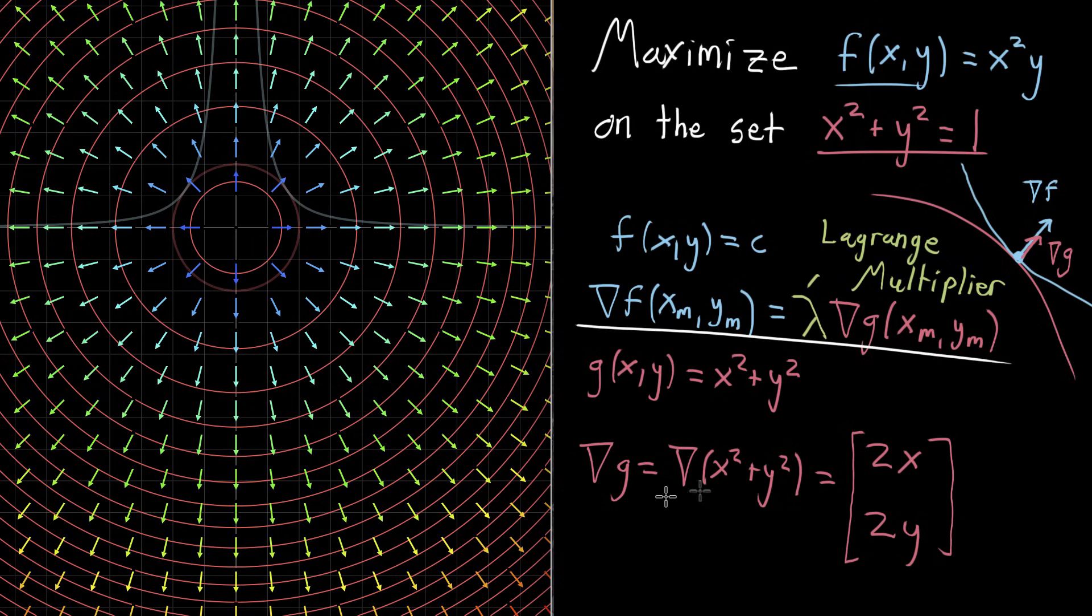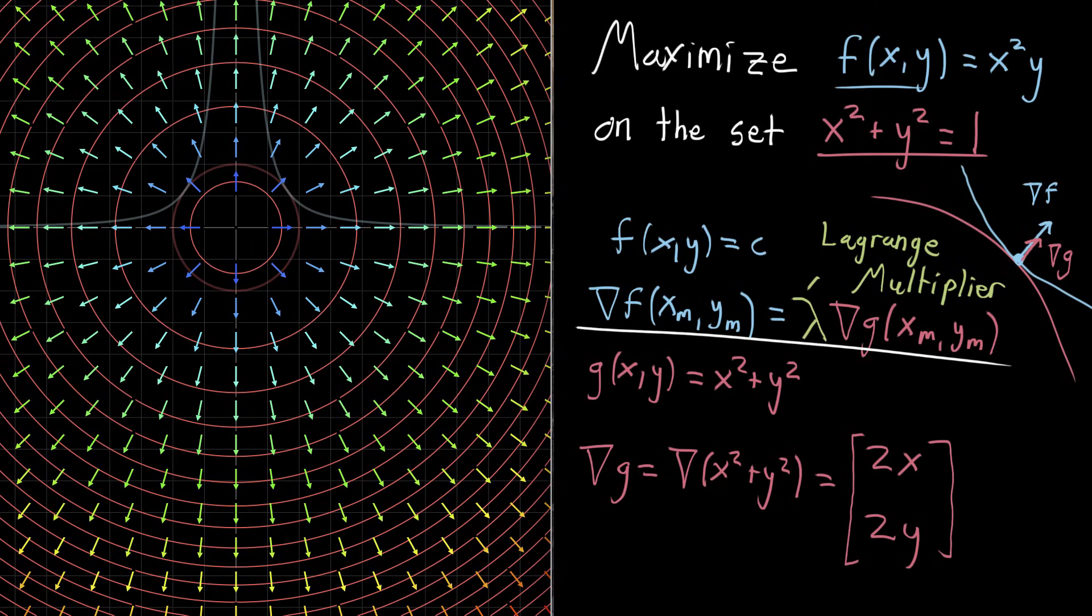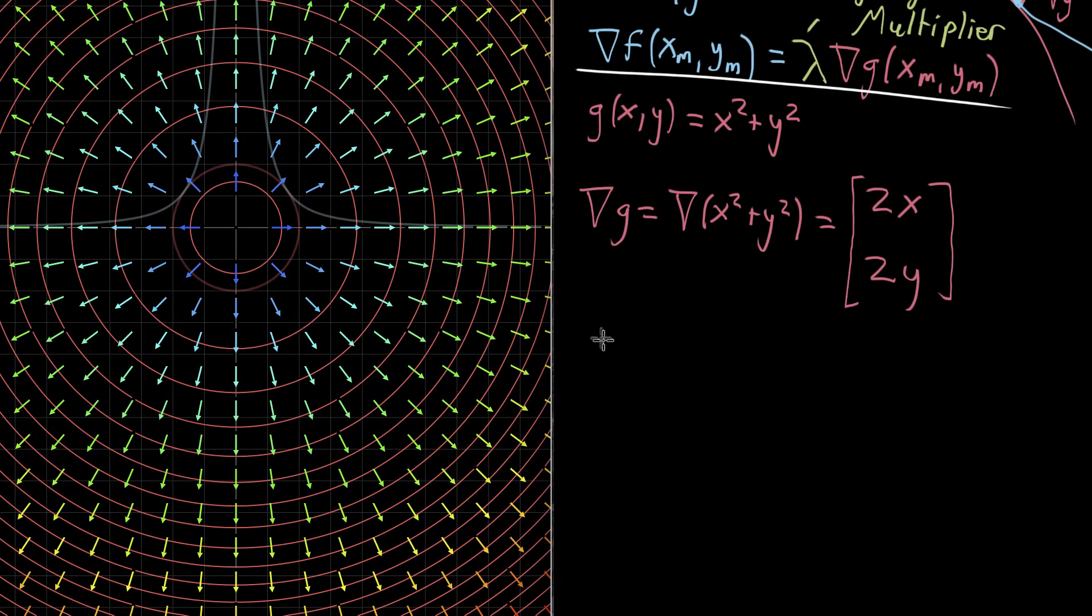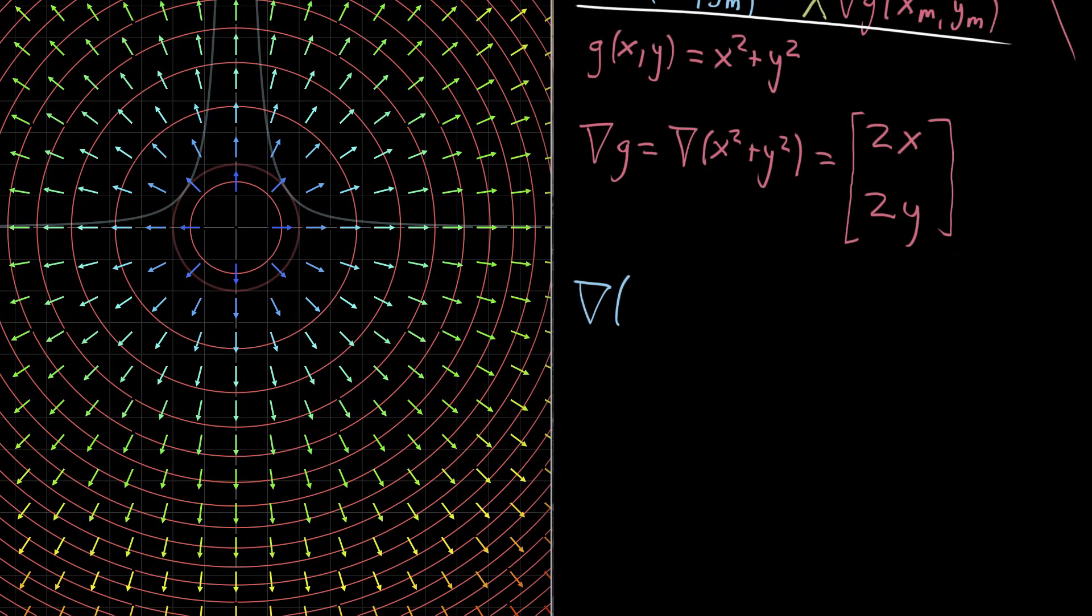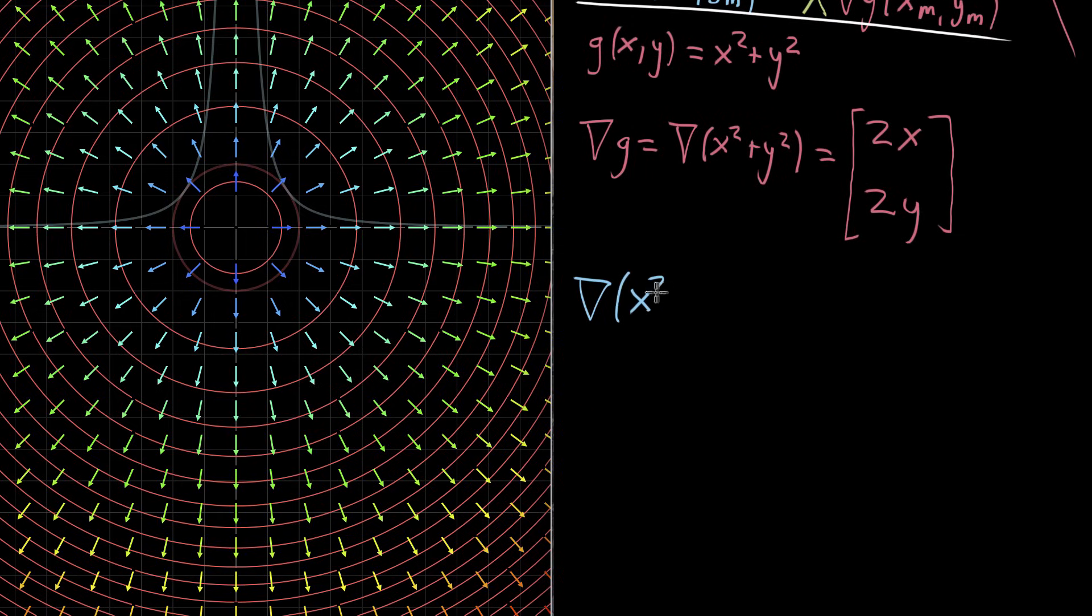Okay, so that's the gradient of g. And then the gradient of f, gradient of f, it's going to look like gradient of, let's see, what is f? It's x squared times y. So x squared times y.